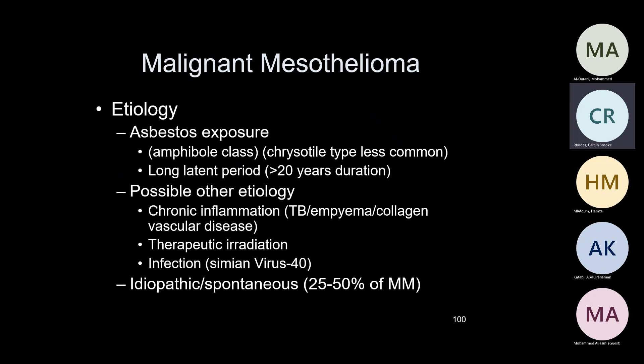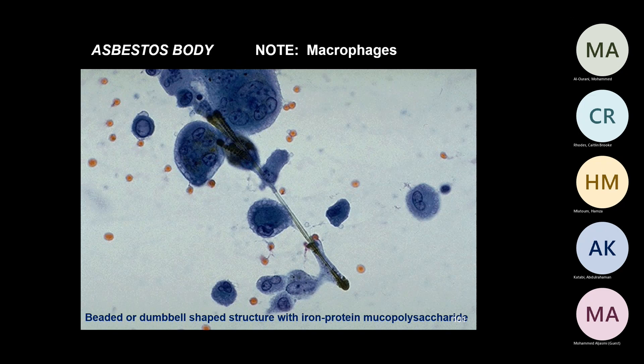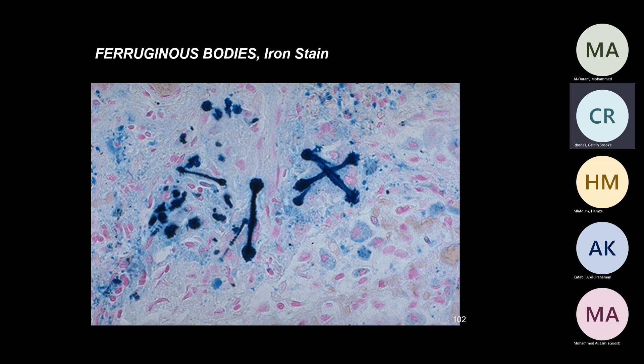The asbestos fiber appears dumbbell-shaped with a lucent center and protein material — ferruginous bodies. If you do an iron stain, it stains for iron — so-called ferruginous bodies or iron-containing bodies. Confluent gray-white nodular patches are usually in the lower lungs or at the diaphragm with invasion of thoracic structures and pleural effusions. Plaques are not malignant mesothelioma.